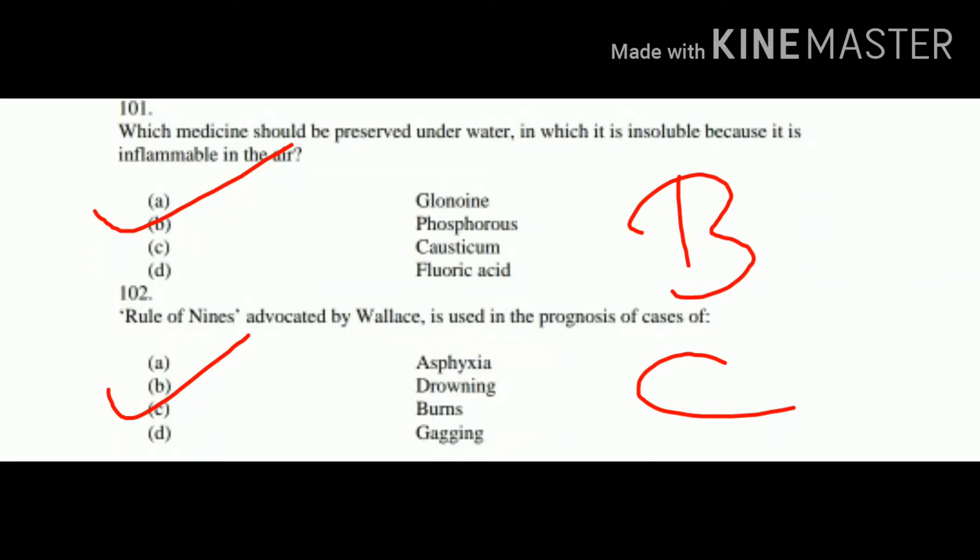Good morning friends. We are continuing our series of UPSC Homoeopathy. Question number 101: Which medicine should be preserved underwater, in which it is insoluble, because it is inflammable in air? Options: A. Glonine, B. Phosphorus, C. Causticum, D. Fluoric Acid. The right answer is B. Phosphorus.